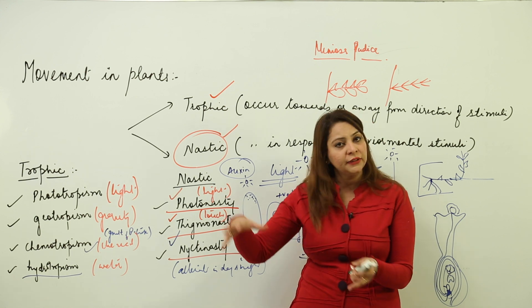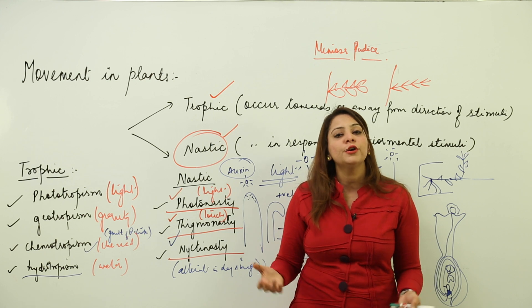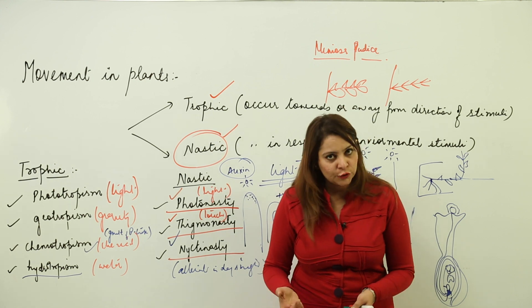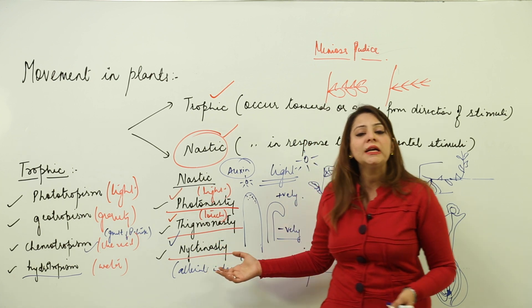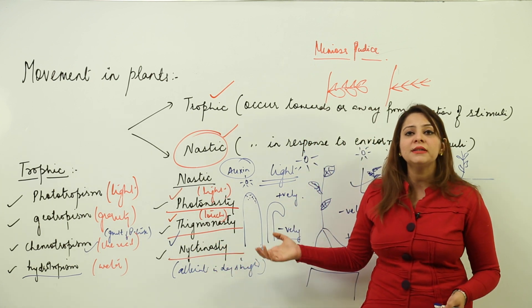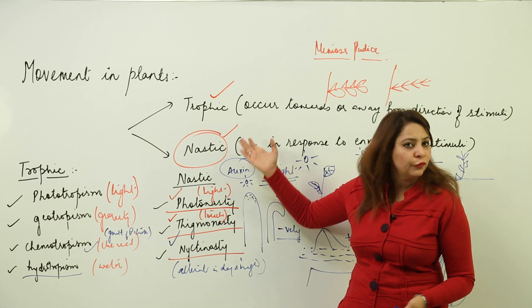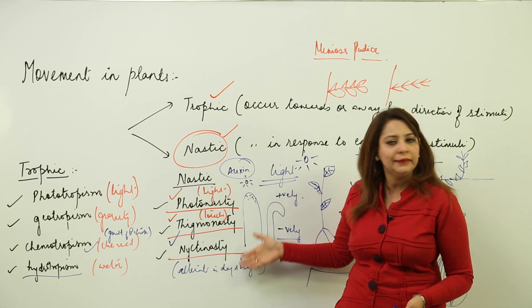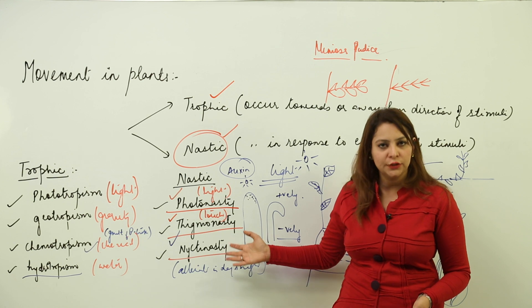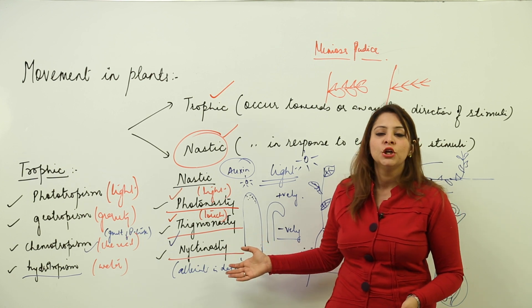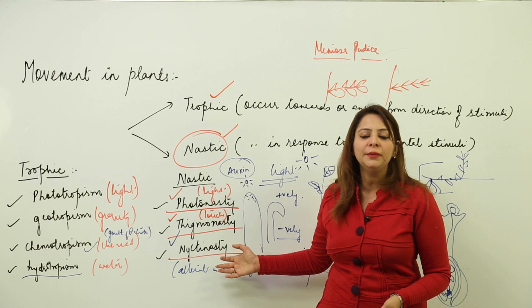Movement in plants is not restricted to the whole body moving from place to place — movement of any body part also counts. The stimulus can be any of the many we have discussed. So, from today, don't think that plants cannot move. We have covered tropic movements, nastic movements, and the various tropisms and nasties seen in plants.